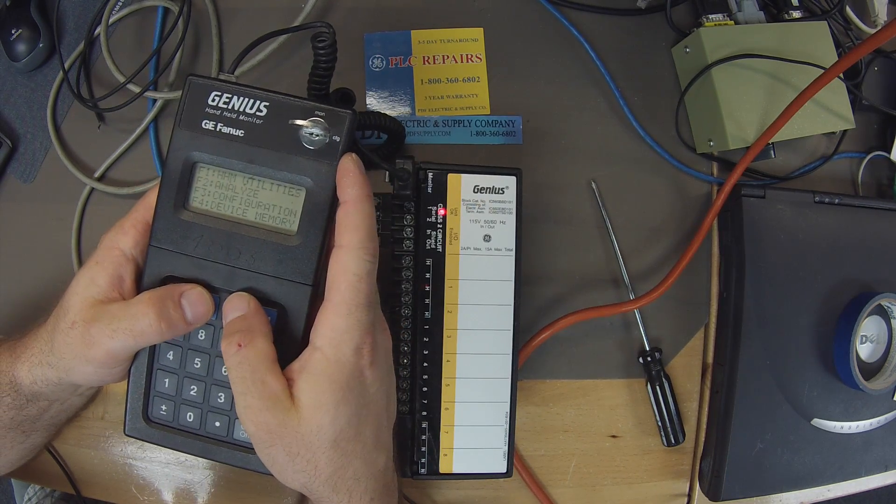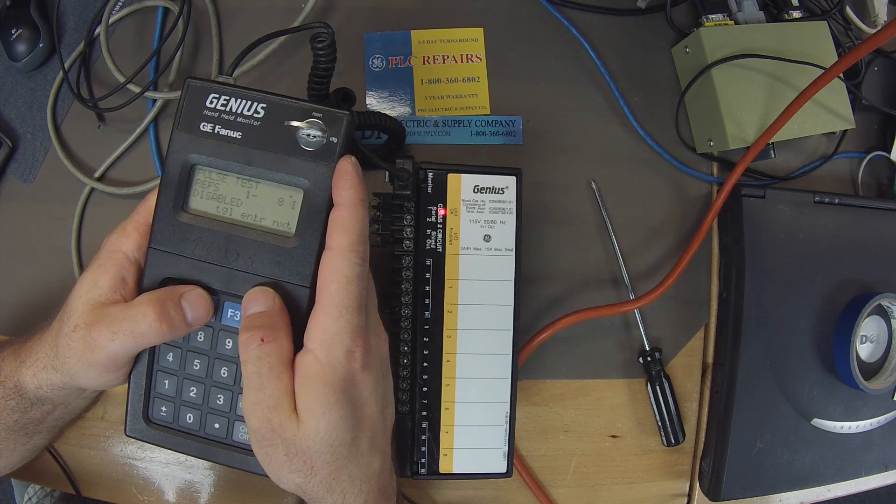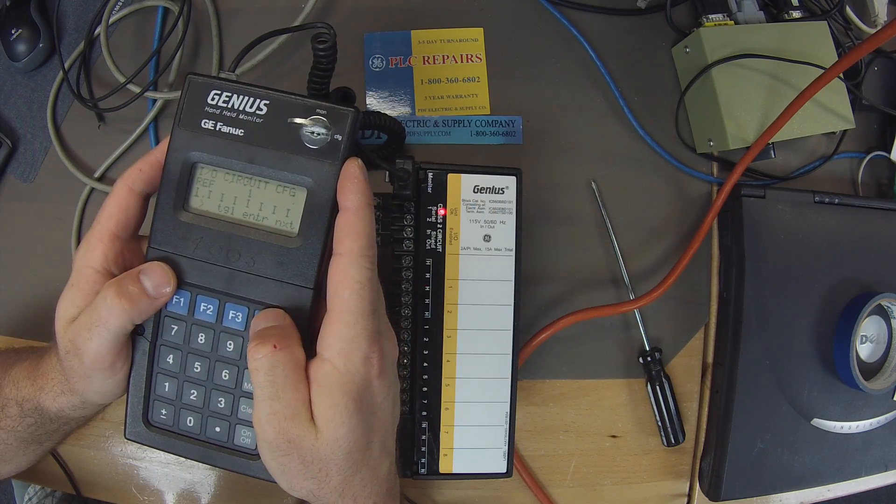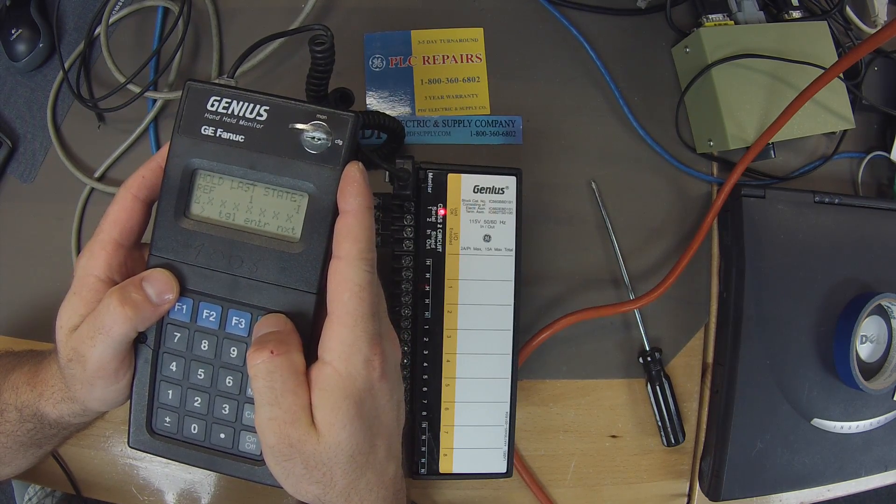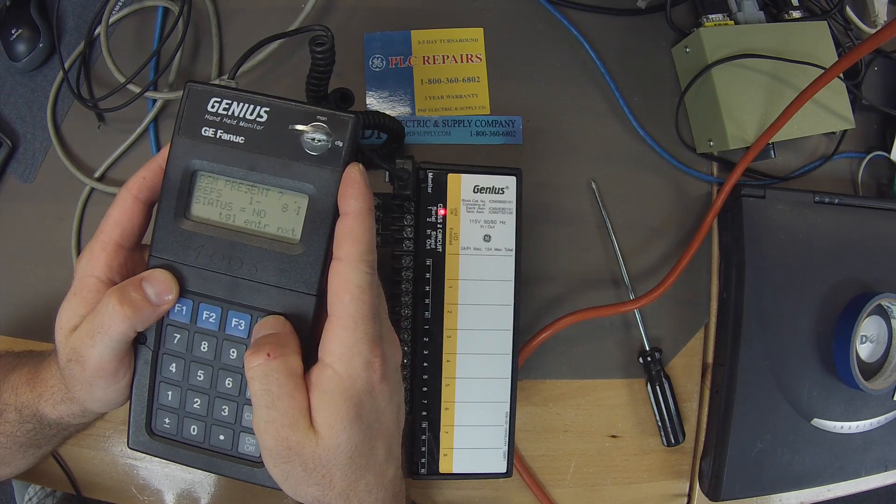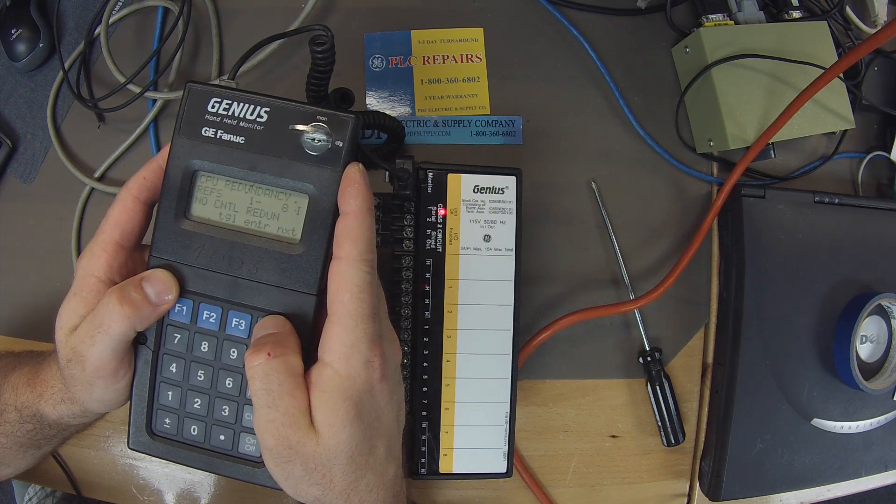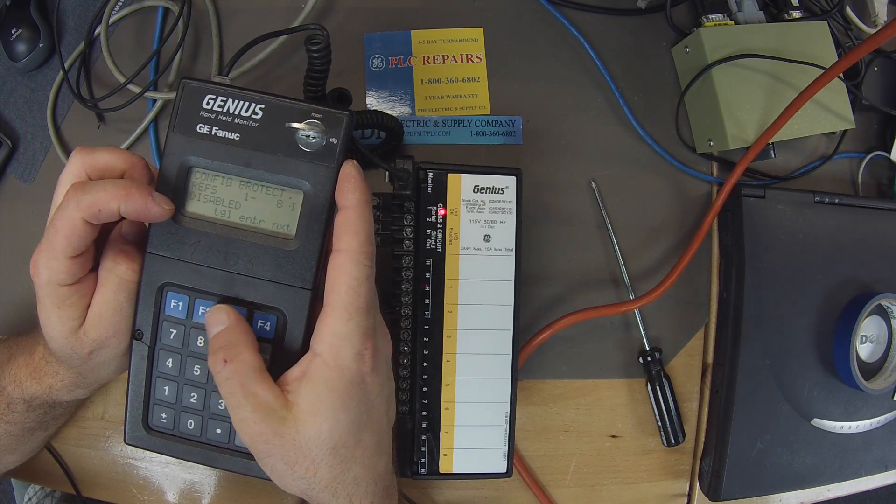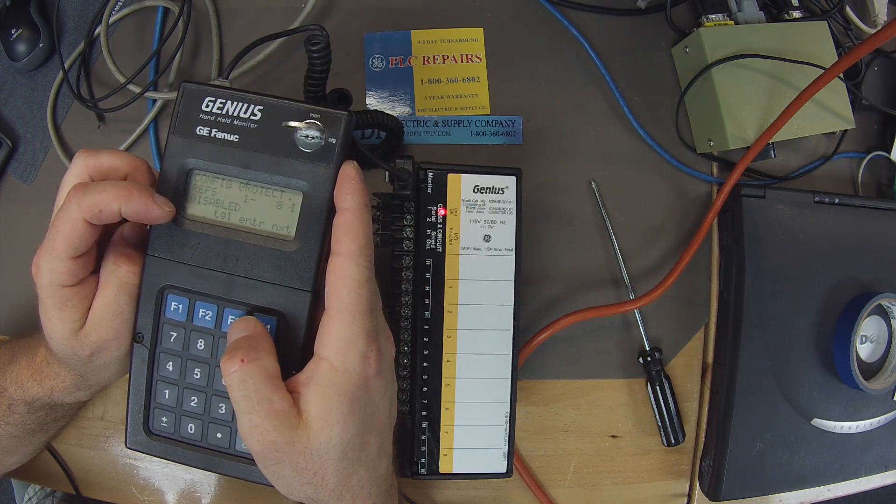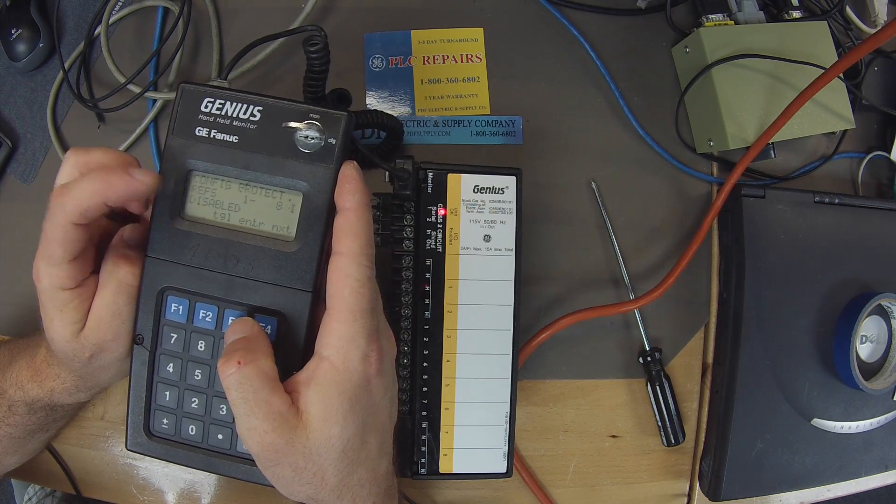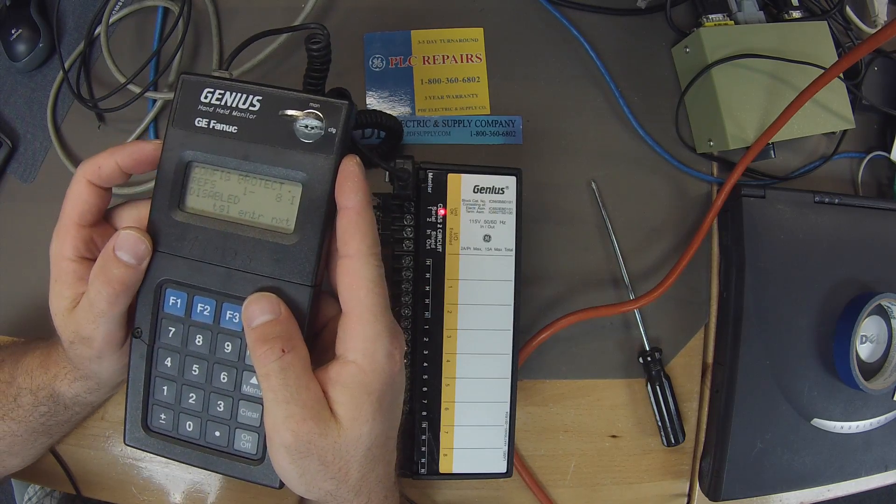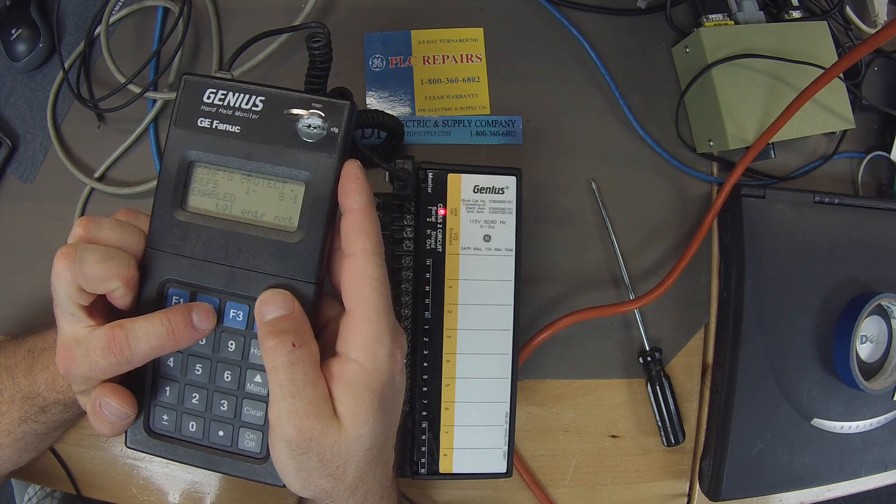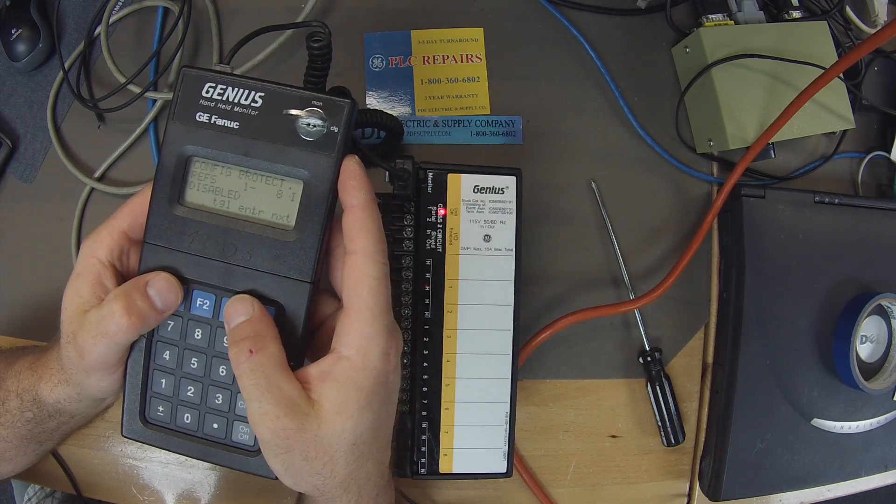Go back to home, F3 configuration, F2, configure block. Now we want to make sure that our settings are set up so that it doesn't inhibit the test. The other thing is this configuration protect, you're not allowed to edit or make any changes to the programming of the genius block unless this is in the disabled function. However, if you do need to have it set up a certain way, you need to protect your block, you can always toggle to enable the protection. But in this particular case, as we're testing, we're going to leave that alone.